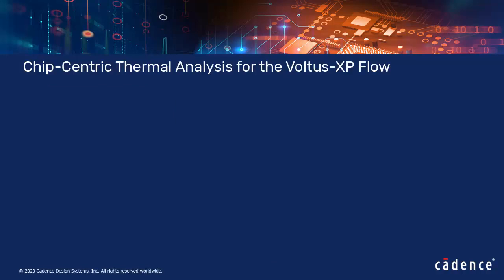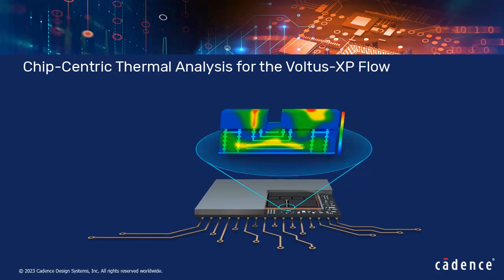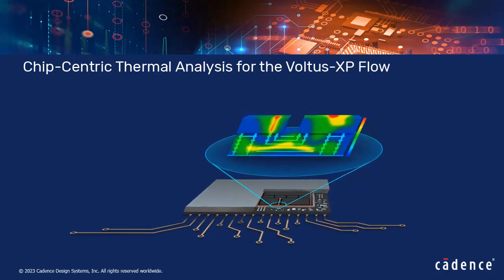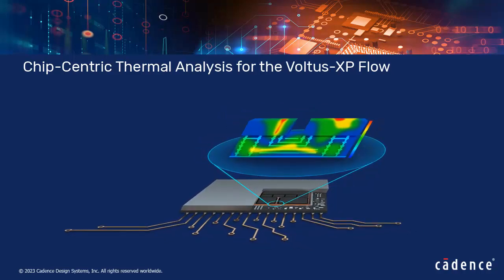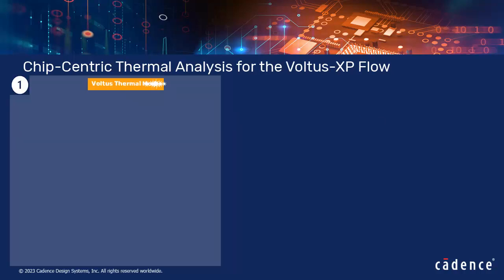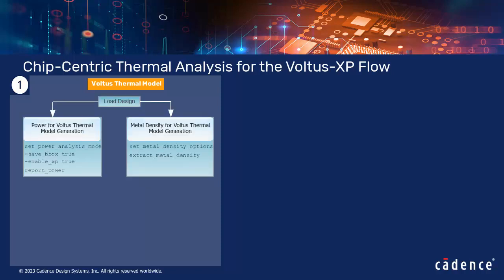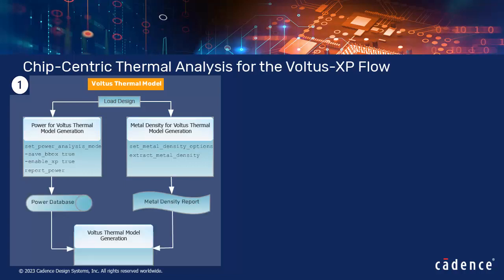Voltus can perform chip-centric thermal analysis to handle very large designs without loading design data into memory. It has three main steps. The first step is Voltus thermal model, or VTM, generation, which involves extraction of metal density and generation of a power database. The metal density file and power database can be combined for VTM generation using the create thermal model command.